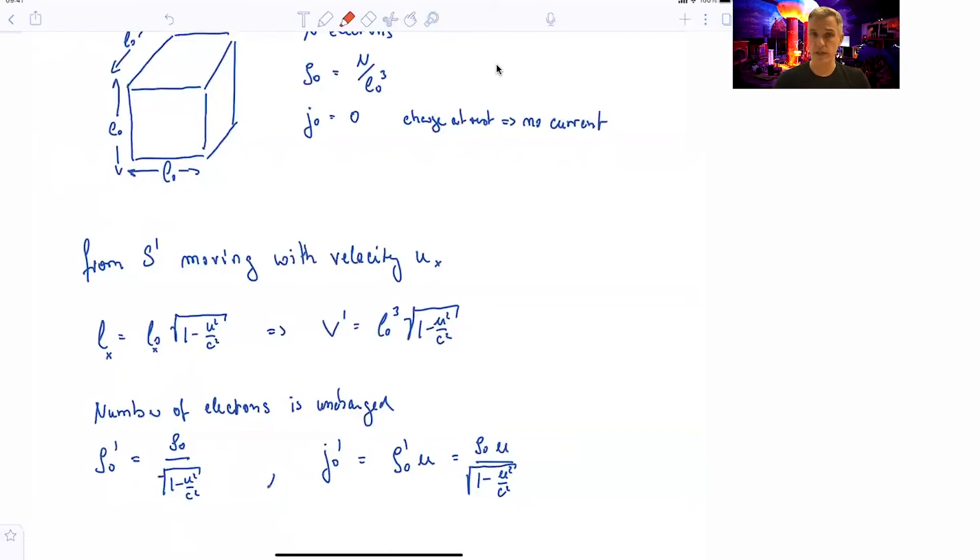The number of electrons, however, is unchanged. So the charge density is the previous charge density divided by the volume. And if you compare the charge divided by the new volume, the density is times gamma.